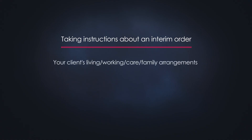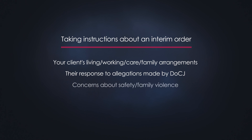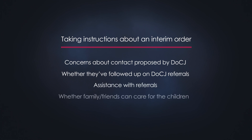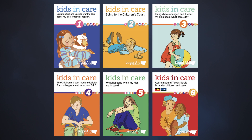There are many things that might be relevant when taking instructions from your client about an interim order and each case will be different. Some helpful things to take instructions on include your client's current living, working, care and family arrangements; their response to the allegations made by the Department of Communities and Justice; whether the parent has concerns about their safety or if there has been family violence; whether they have issues about contact proposed by DCJ; whether they have followed up on any referrals made by DCJ; whether you can help them with referrals; and whether there are any family, kin or friends that might be able to care for the children. Legal Aid has some useful brochures to help explain legal concepts and upcoming court events.